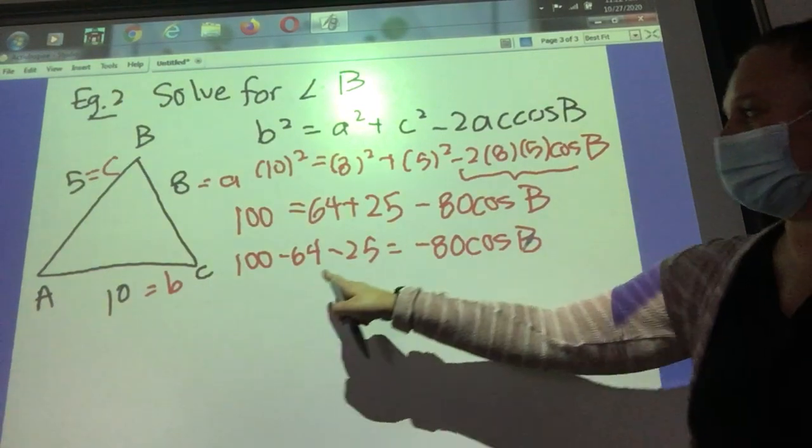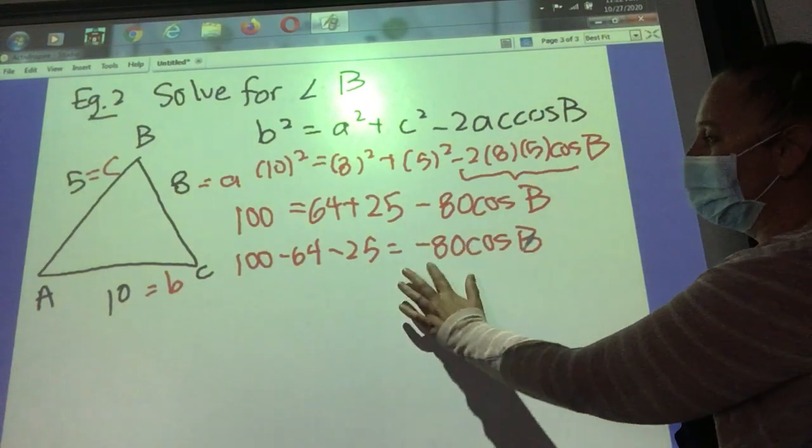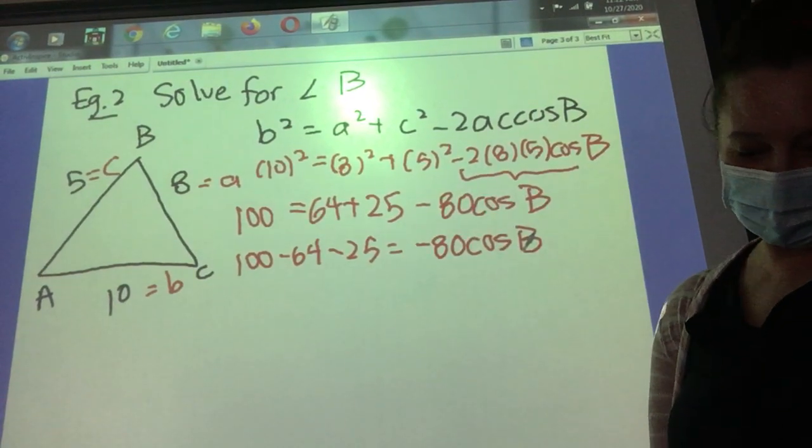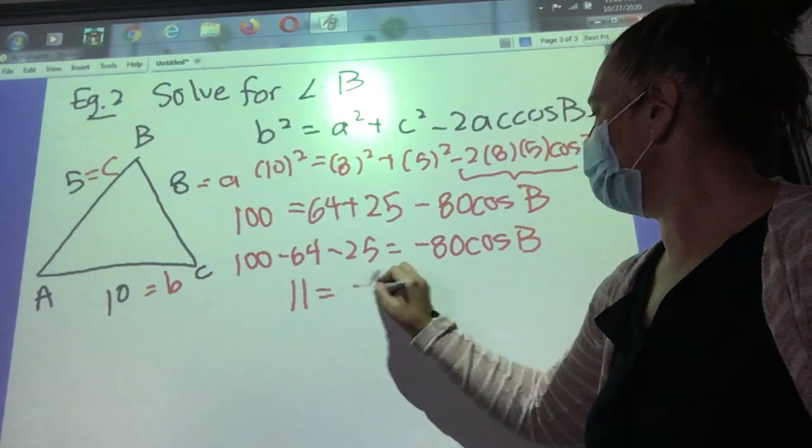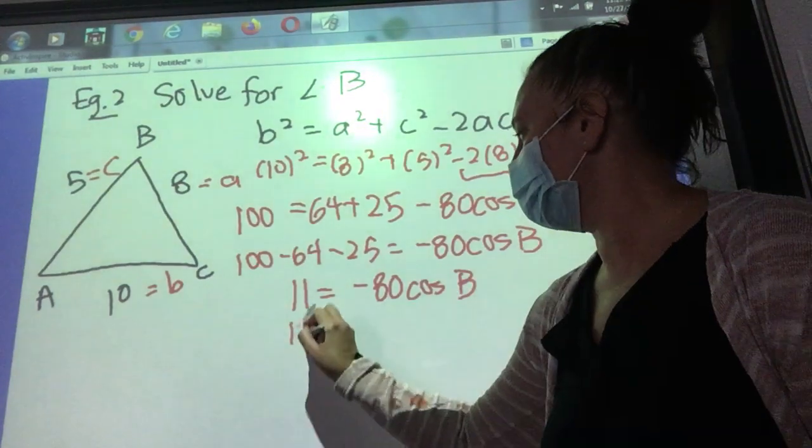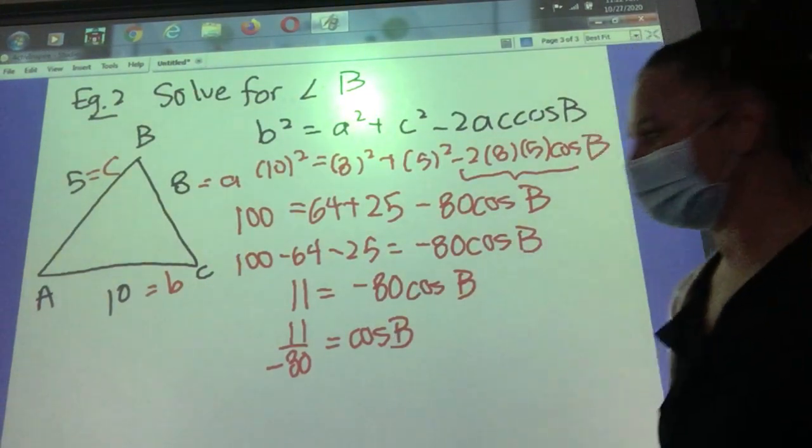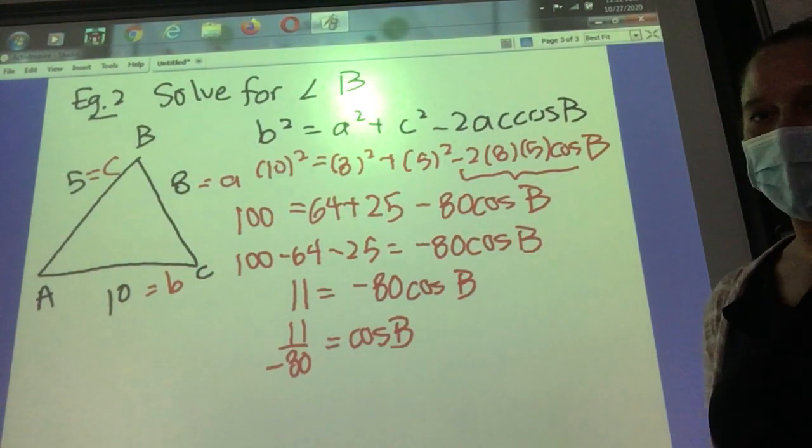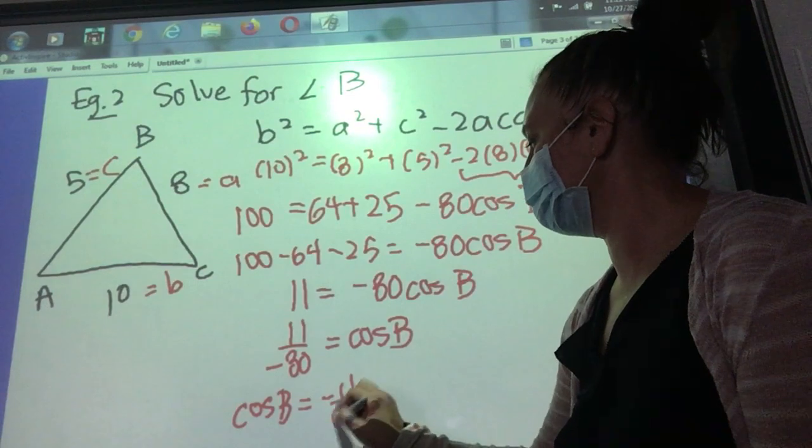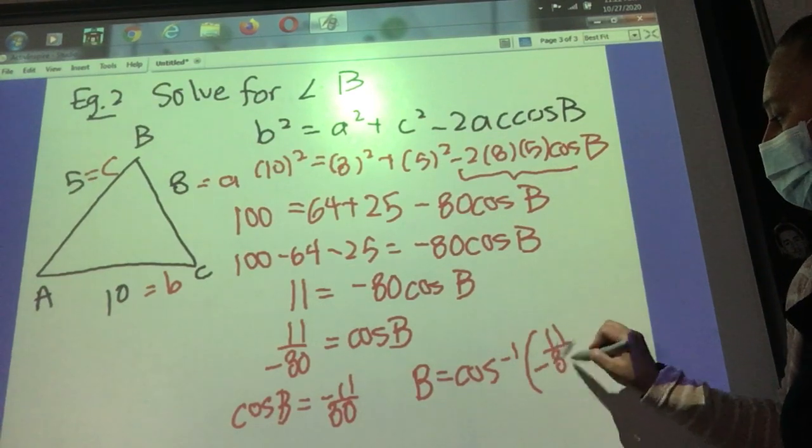That's a very common error. A lot of students will subtract the minus 8, or they'll add 80 to the other side. You can't break that apart. This is all one term, a monomial. So the minus 80 stays with the cos B. So that's the only thing that can go wrong in this question. Well, hopefully. So if you did this correctly, 11 equals minus 80 cos B. Now we're trying to isolate B. So we will divide both sides by negative 80. And just like we did yesterday, we're not done. That's cos B, but we're not solving for cos B. We're solving for angle B.